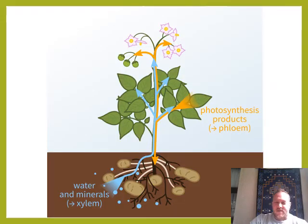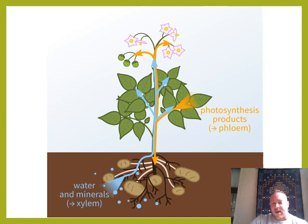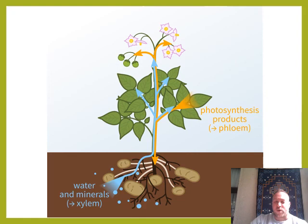Xylem only moves in one direction — from the roots up to the shoots. That is it. It cannot go back down. If it moved back down, it would be like your blood being able to move backwards and forwards, and you might not get the correct nutrition. So water only moves from the roots to the shoots.